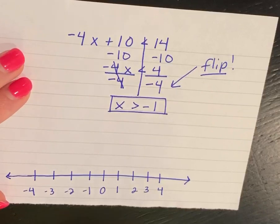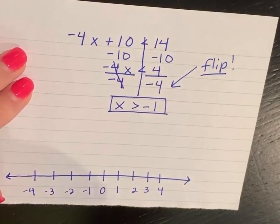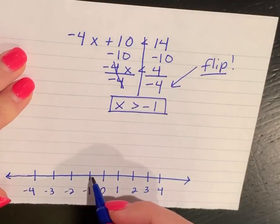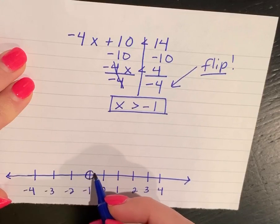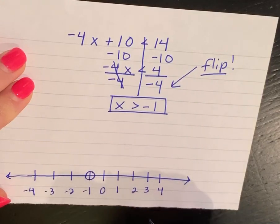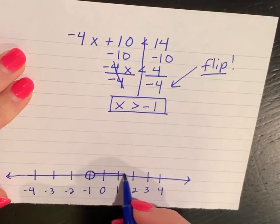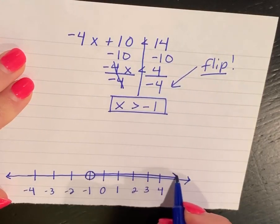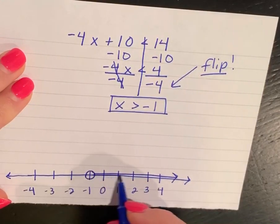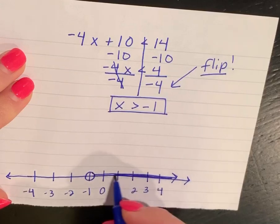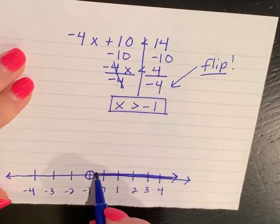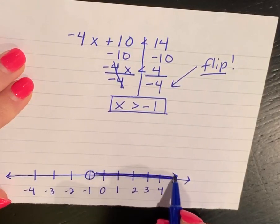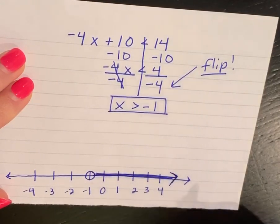When I put that on the number line, I'm going to have an open circle at negative 1, and my arrow is going to be going to the right, because x is greater than negative 1, so I want to go towards the greater numbers.